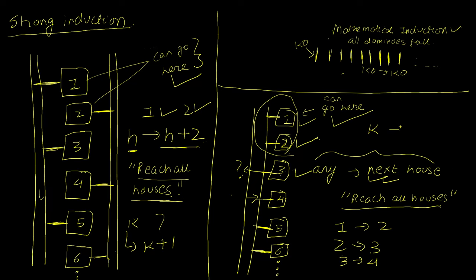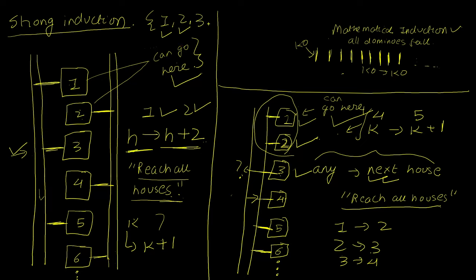Instead, let's remember all previously reachable houses. We create a set containing houses 1 and 2 as given. To reach house 3, we don't need to depend on 2 alone — we can use the fact that we reached house 1, since from 1 we can reach 3 directly. When proving house 4, we use the already-proven fact about house 2. This way we can prove we can reach all houses.